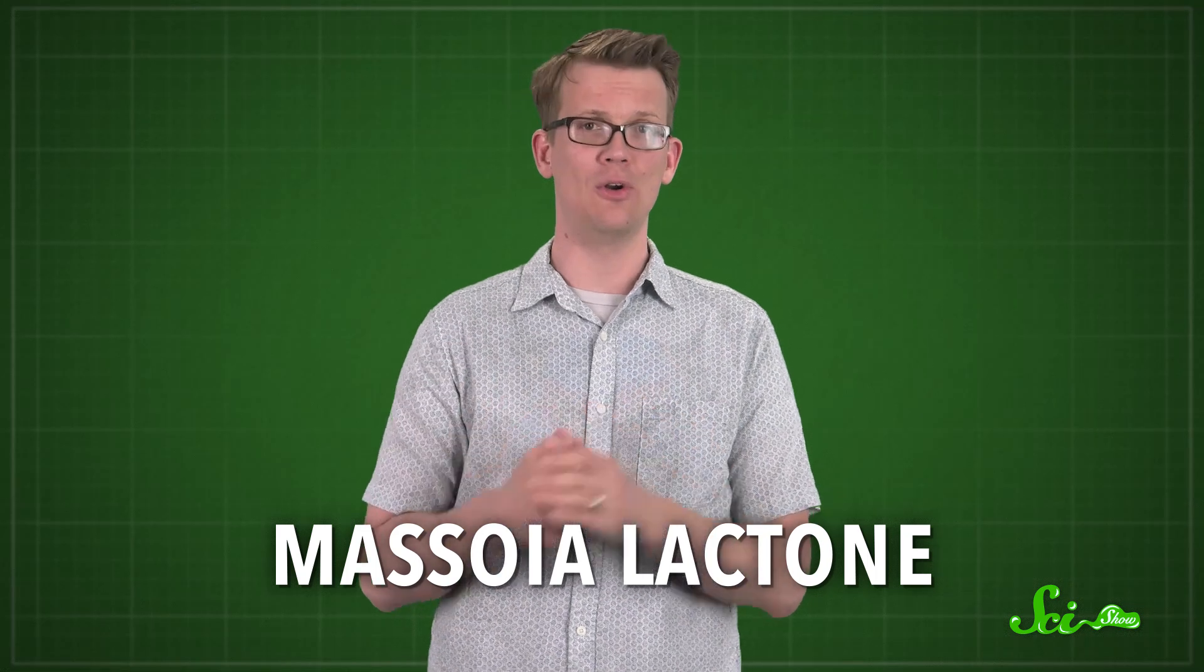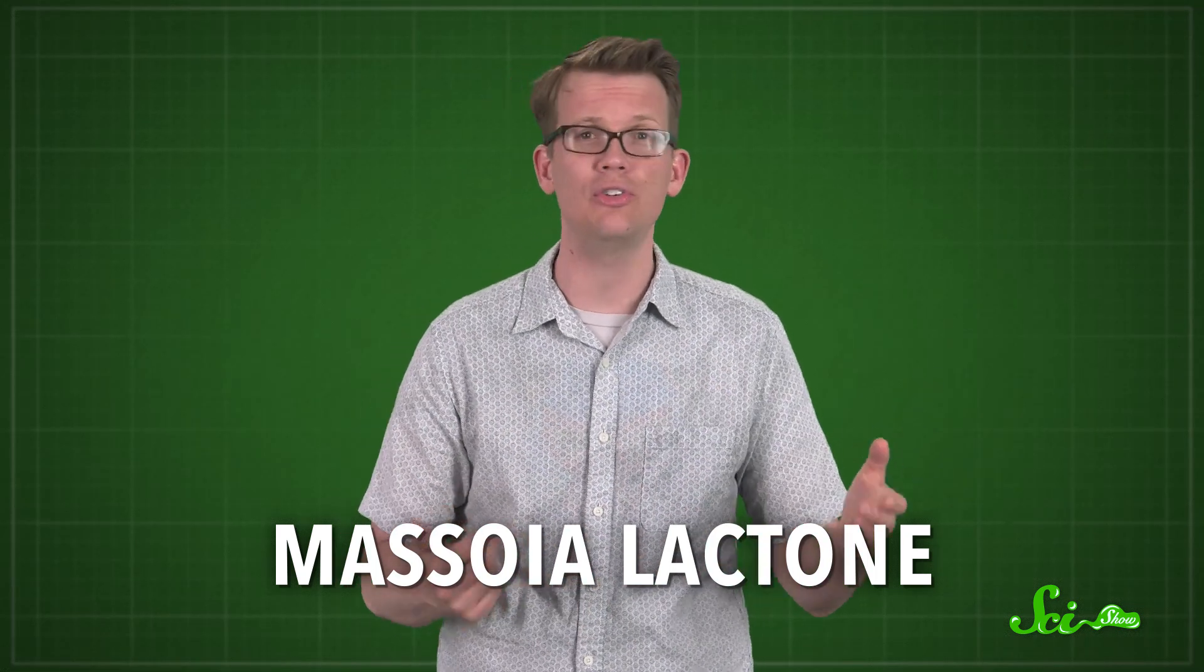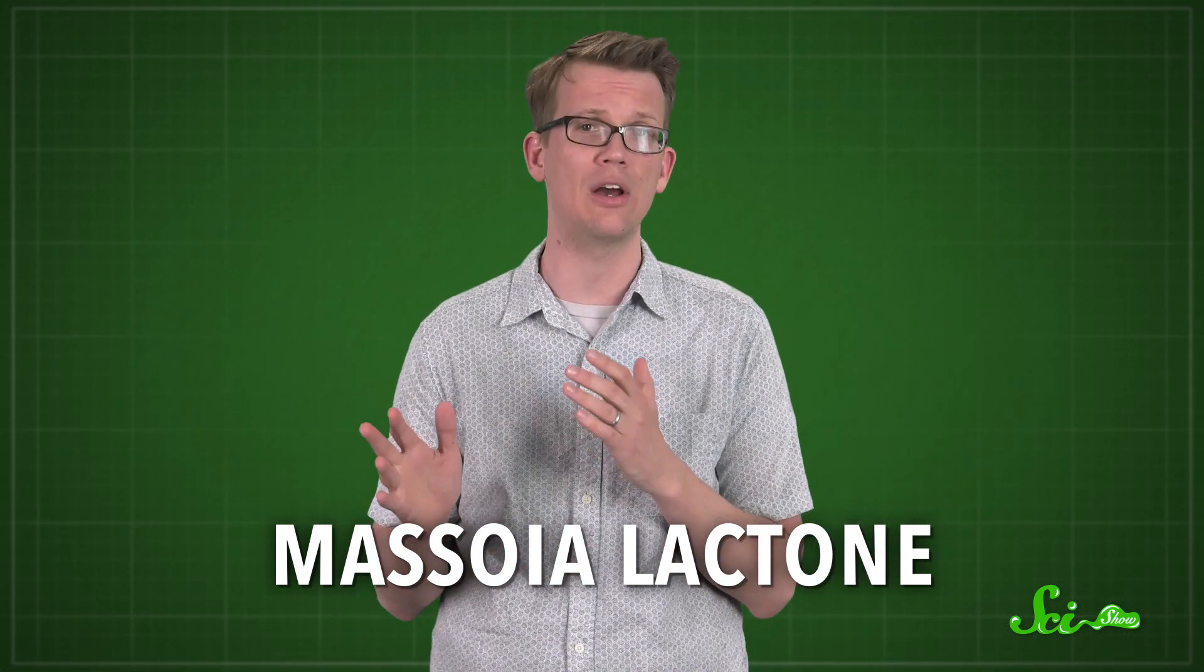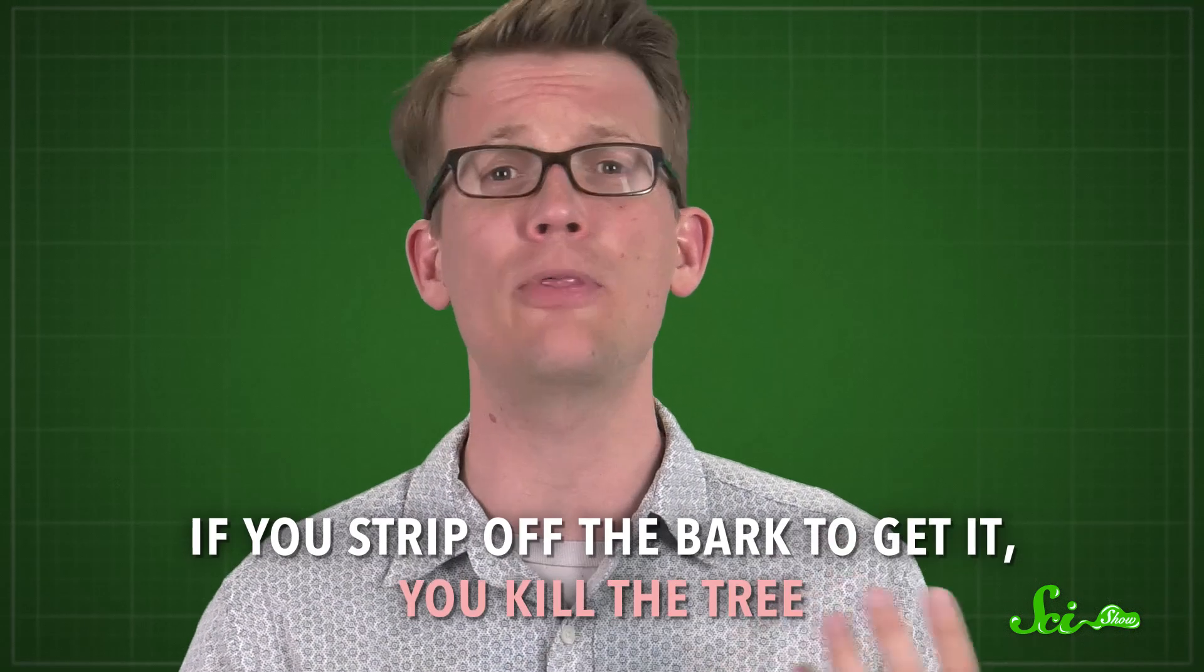Take masoyalactone, a chemical that tastes like coconut, which you can find in the bark of certain trees in Southeast Asia. The tricky part is if you strip the bark to get it, you kill the tree. So as much as we might want to have that lovely piña colada flavor, the natural version is really inefficient and unsustainable. Whereas synthetic chemists can whip up masoyalactone in the lab, no tree-stripping necessary.